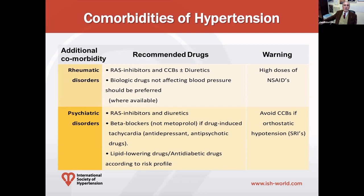In terms of treatment of hypertension in patients with rheumatic disease, treatment with renin-angiotensin system inhibitors and calcium channel blockers in combination with diuretics may be the best solution, given the activation of the renin-angiotensin system seen in this population. At the same time, the biological treatments currently used in these patients usually do not affect blood pressure and can be used in every country where they are available.